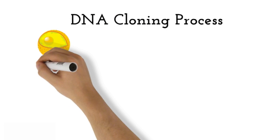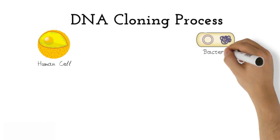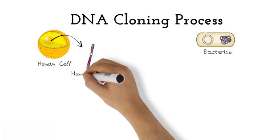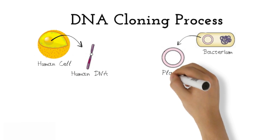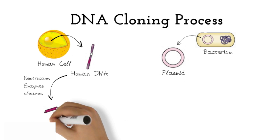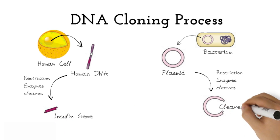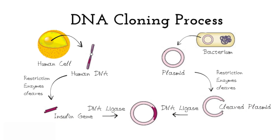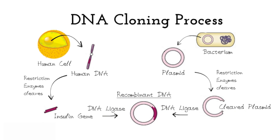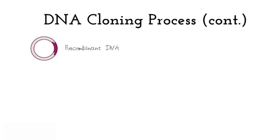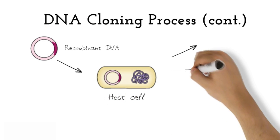Now let's take a look at how DNA is cloned. Here we have a human cell and a bacterium. Human DNA will be isolated, as well as a plasmid from the bacterium. Restriction enzymes will cut the human DNA to isolate the human insulin gene and will also cleave the plasmid, leaving sticky ends that the gene will recognize. Then DNA ligase joins the gene and plasmid together to create the recombinant DNA, which will develop in the host cell as DNA cloning occurs.